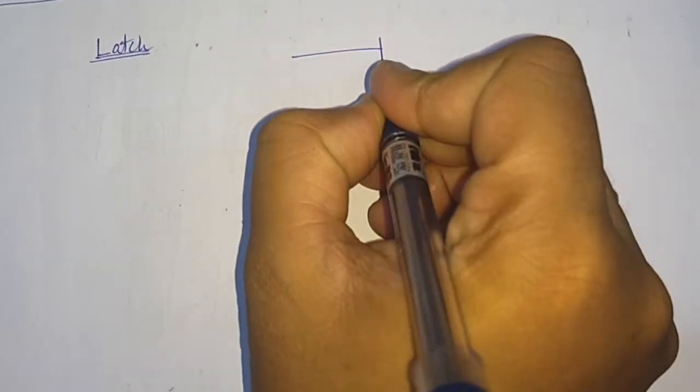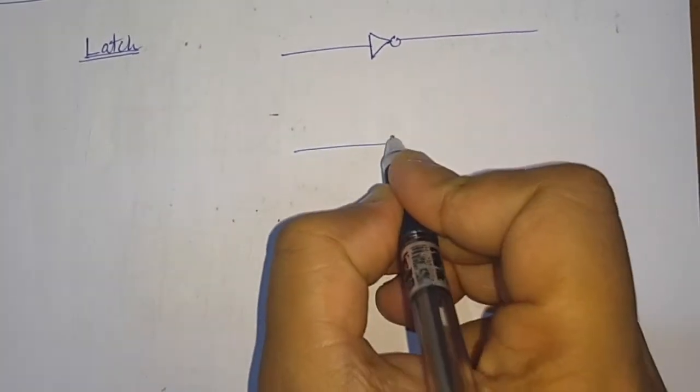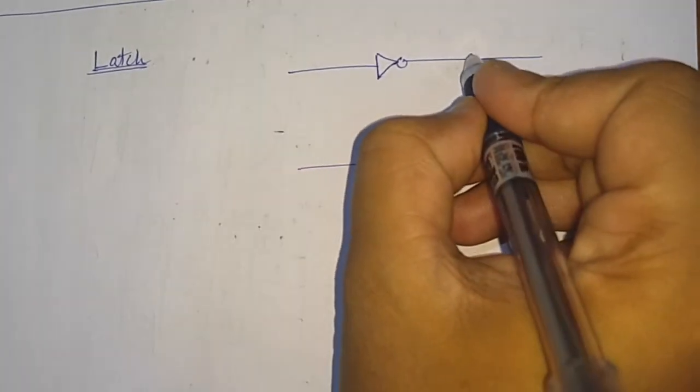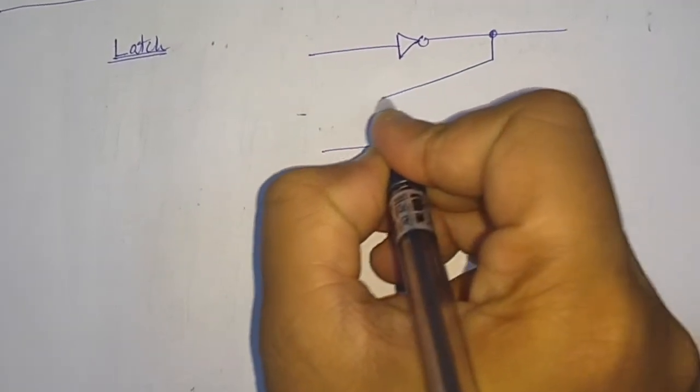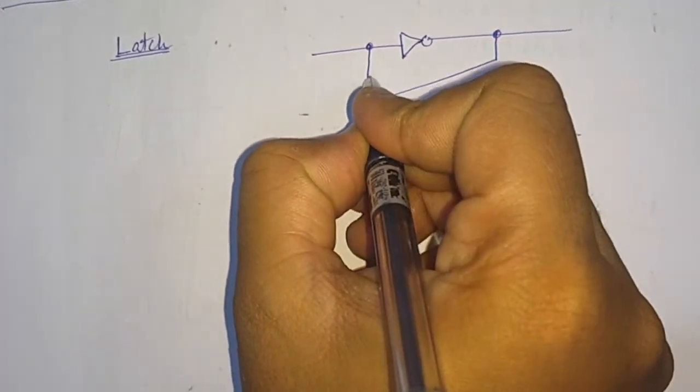We will use here a NOT gate, and here also we will use a NOT gate. And we will connect like this, and we will connect here like this.